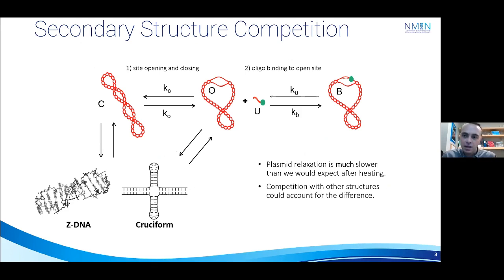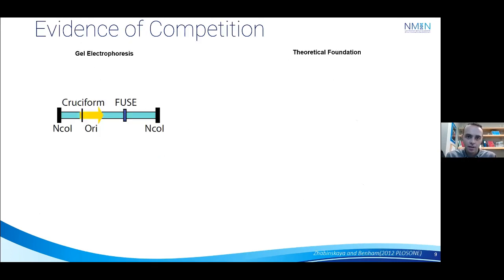And so what other evidence do we have to support this hypothesis? Well, to actually measure the secondary structures other than the unwinding site, we cooled and heated plasmids and used a potassium permanganate footprinting gel, which basically just means that we cut single-stranded regions and then run this on an electrophoretic gel.